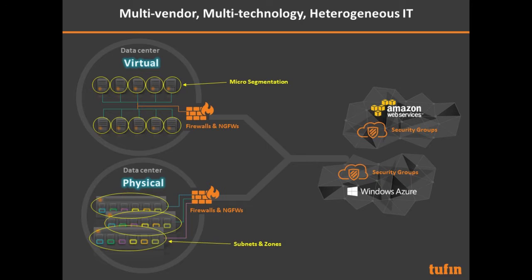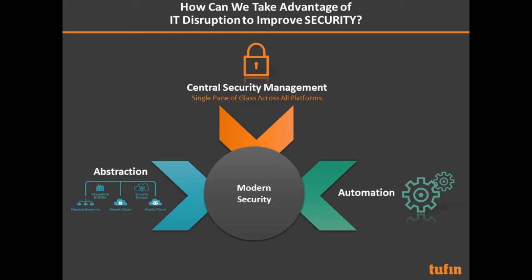We're moving towards a multi-vendor, multi-technology, heterogeneous IT environment: physical networks that will stay forever, virtual data centers, and public clouds. In the physical data center we use subnets and zones; in virtual data centers we use micro-segmentation via the hypervisor firewall; in public cloud we have security groups. To take advantage of these IT disruptions and improve security, there are three tenets of modern security: central security management, automation, and abstraction.